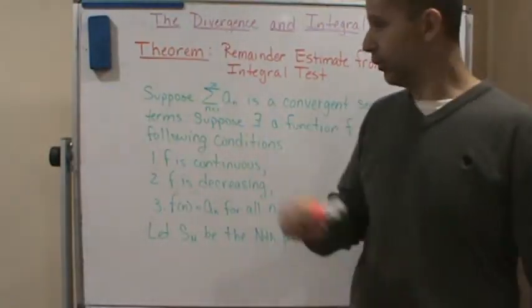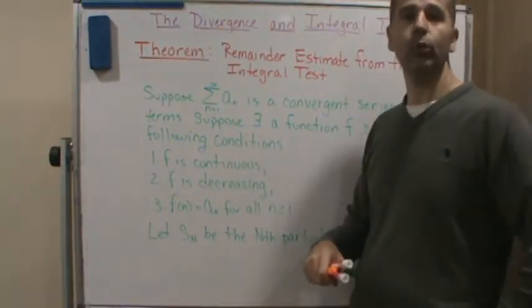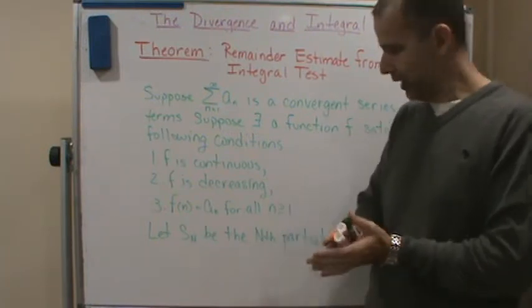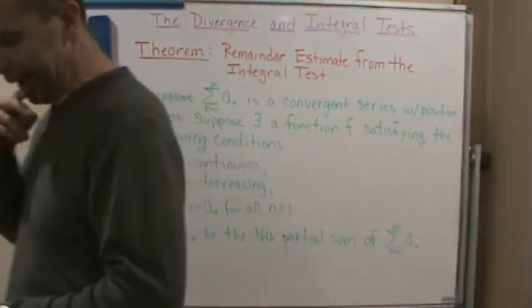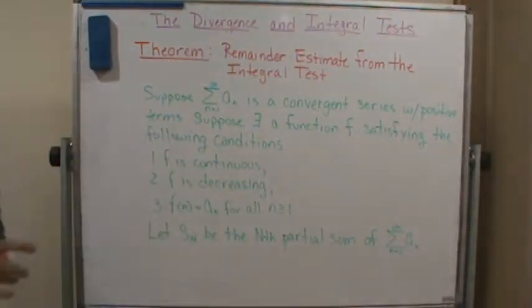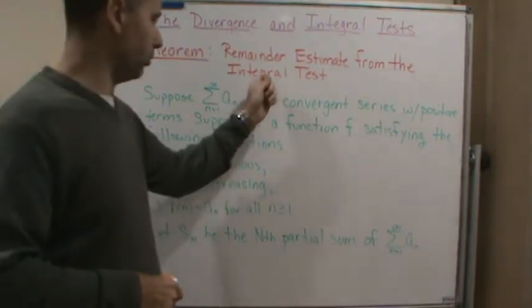So here's the theorem. I don't have the whole thing written down on the board, but I will go over that in a minute. I ran out of room — I think I wrote a little too big. So this is the theorem: this is the Remainder Estimate from the Integral Test.